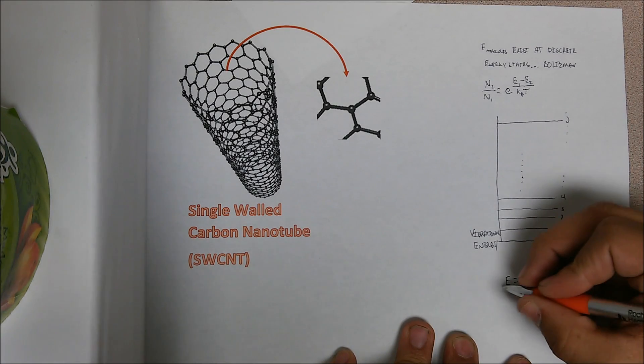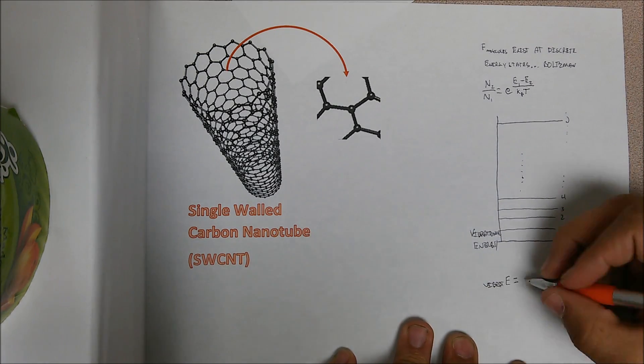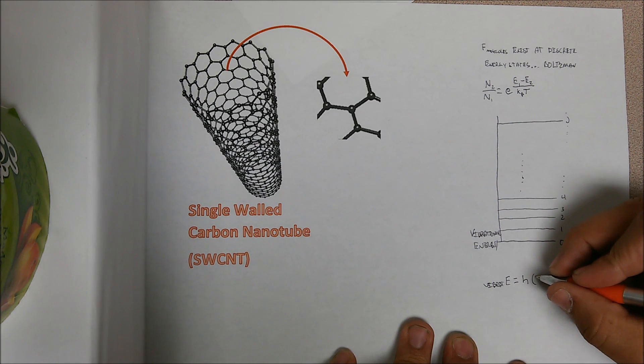Here I have drawn a Jablonski diagram representing the various vibrational energy states that a molecule or population of molecules can exist in.